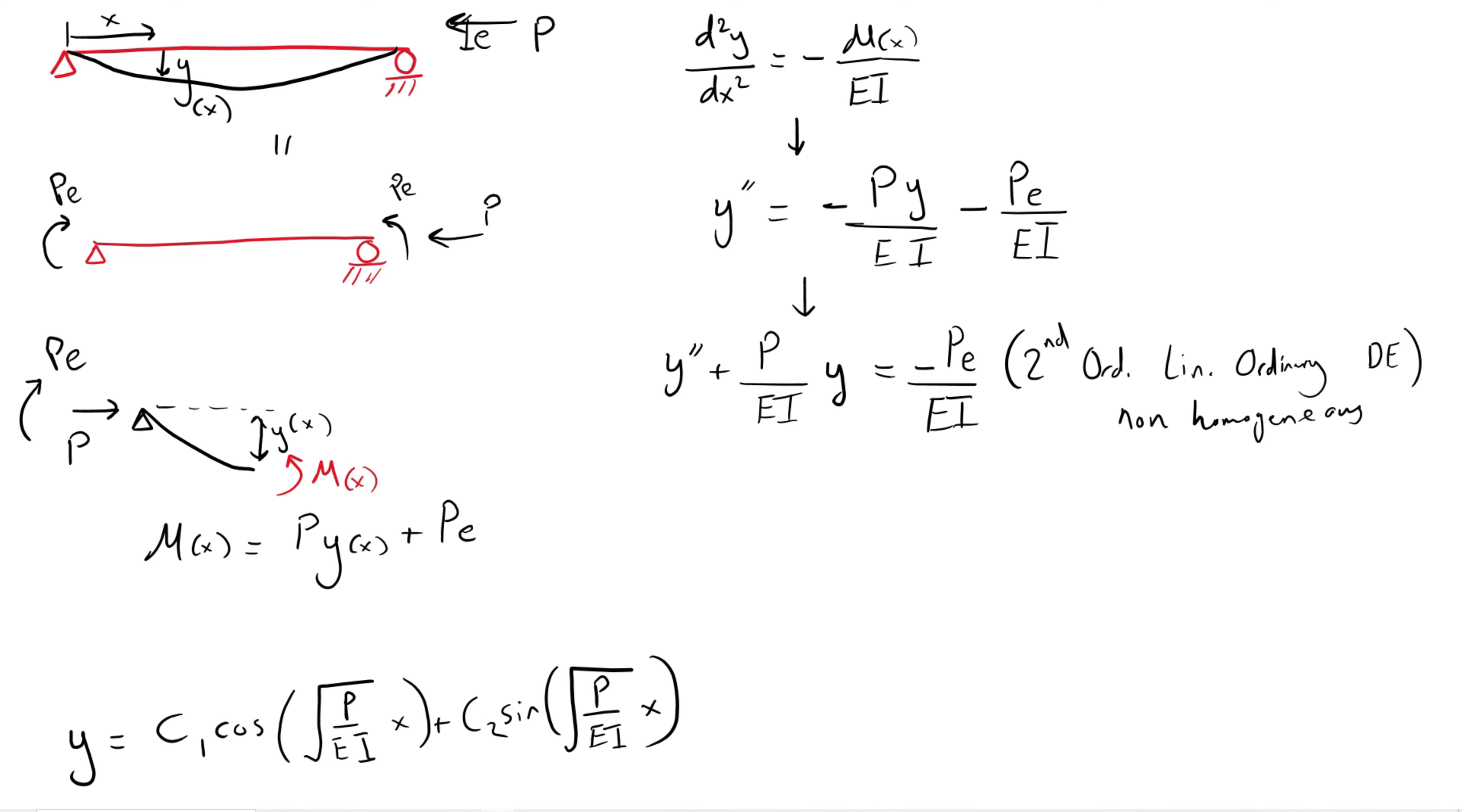Substituting the moment into the governing differential equation will yield the following ordinary differential equation, which is non-homogeneous because the right-hand side is not equal to zero. This means that we have, in addition to the general solution, a particular solution as well.